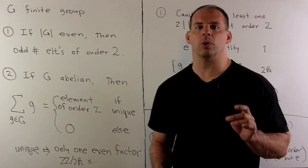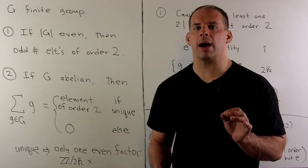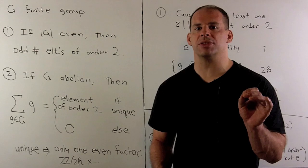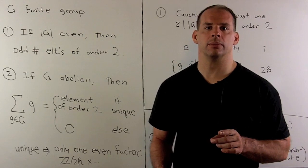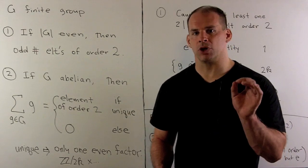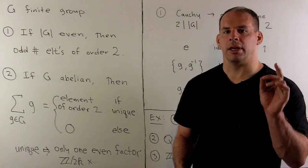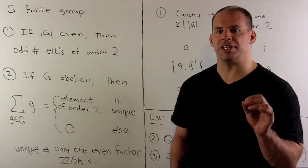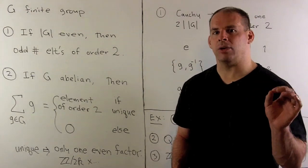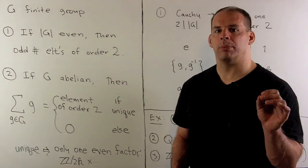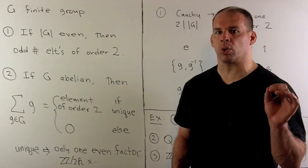Let G be a finite group. Here are two problems on elements of order 2. First problem: if the order of G is even, then we want to show there are an odd number of elements of order 2.